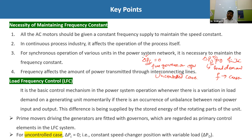In practice, delta_Pd is never zero — there is always some load application or load release. When delta_Pc = 0, the speed changer has no impact on steady-state frequency change, and this is the free governor or uncontrolled case of load distribution.